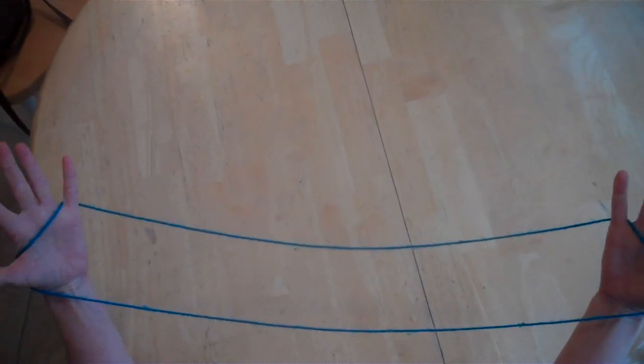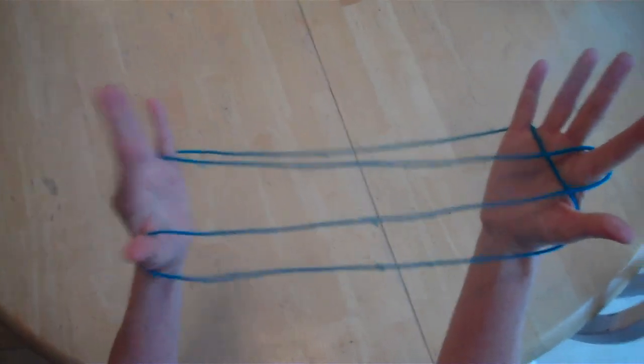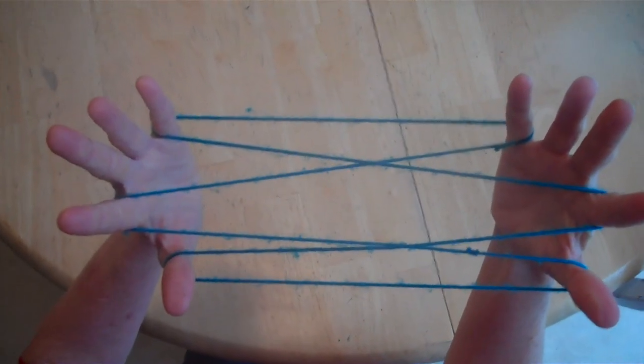All right, the kingfish starts off with the string over both palms in the normal position. Pick it up off of each opposite palm. This is the opening A position.